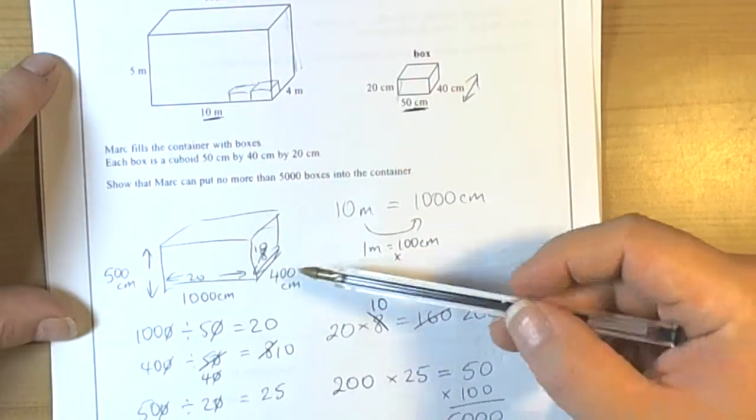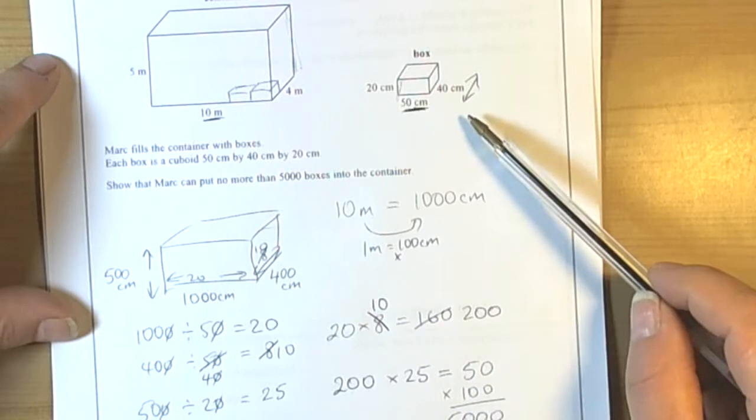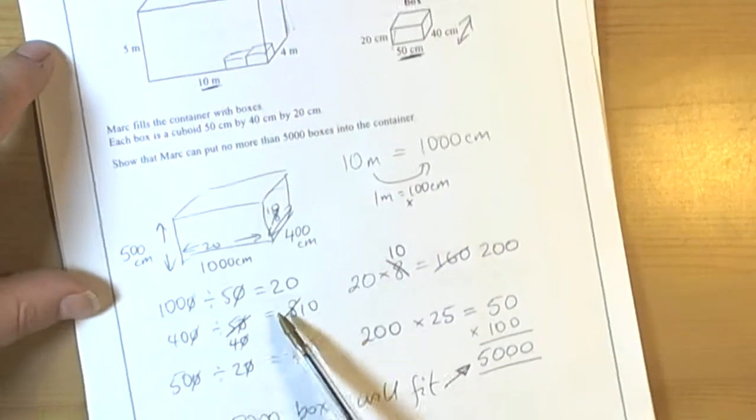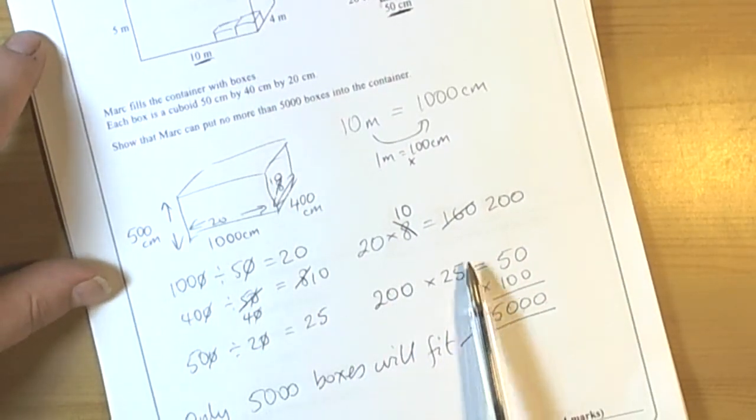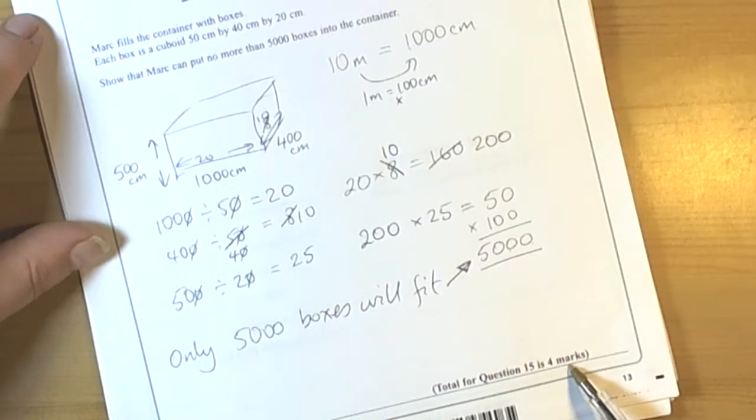Like I did here, really important we check that we've used all the correct numbers and show all our workings out so that we can get all the marks possible for a star question. Four marks are quite a high scoring question.